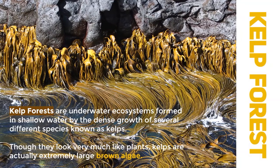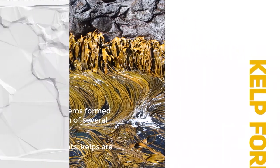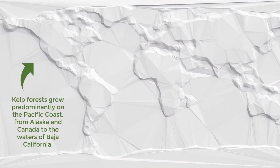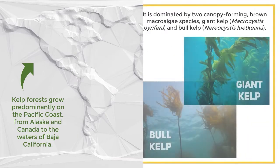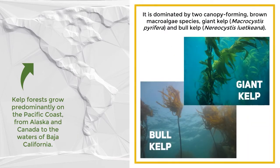Kelp forests are underwater ecosystems formed in shallow water by the dense growth of several different species known as kelps. Though they look very much like plants, kelps are actually extremely large brown algae. Kelp forests grow predominantly on the Pacific coast, from Alaska and Canada to the waters of Baja, California. It is dominated by two canopy-forming brown macroalgae species: giant kelp and bull kelp.